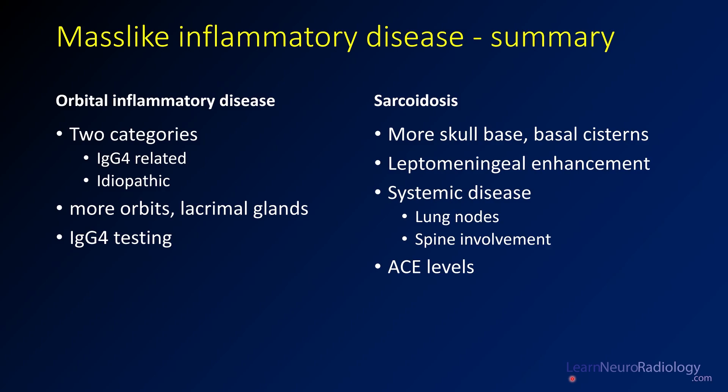In summary, we looked at two mass-like inflammatory diseases in the CNS. Orbital inflammatory disease typically involves the orbit and lacrimal glands; consider IgG4 testing. Sarcoidosis can look similar but tends to favor the skull base and basal cisterns with more leptomeningeal enhancement and systemic disease including spine involvement and elevated ACE levels. When you see diffuse mass-like processes, think about these inflammatory conditions. Check out the earlier videos on encephalitis and inflammatory diseases, and stay tuned for the continuing series.